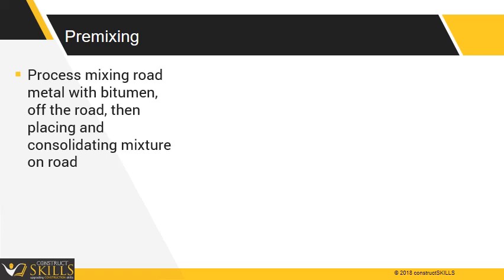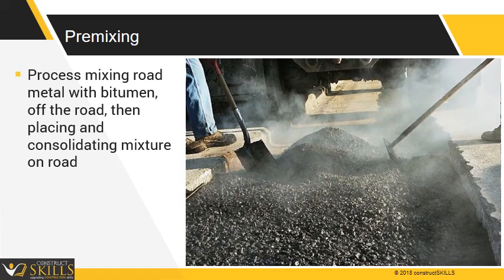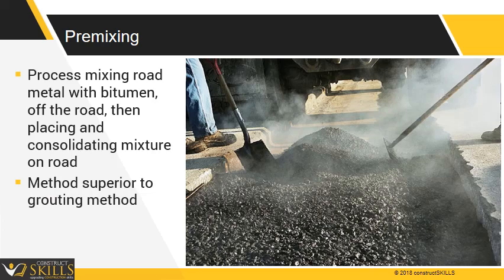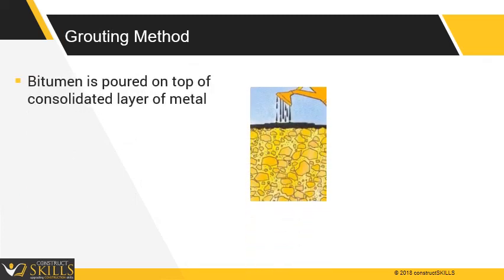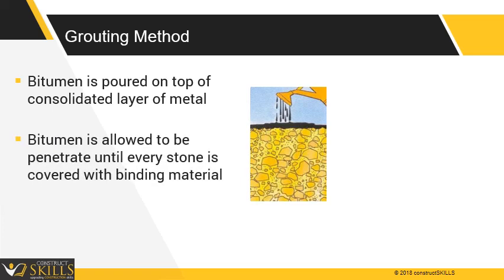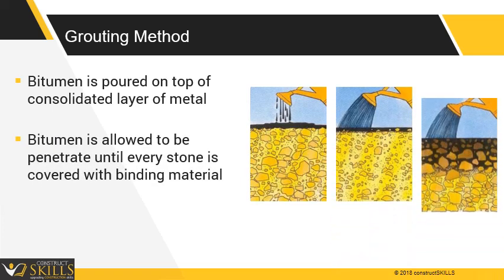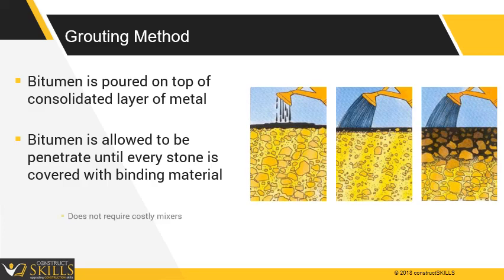Pre-mixing is the process of mixing road metal with bitumen off the road, and then placing and consolidating the mixture on the road. From the point of both stability and economy, this method is superior to the grouting method, and it helps produce denser material. In the grouting method, bitumen is poured on top of a consolidated layer of metal and allowed to penetrate until every stone is covered with the binding material. It does not require any costly mixers.